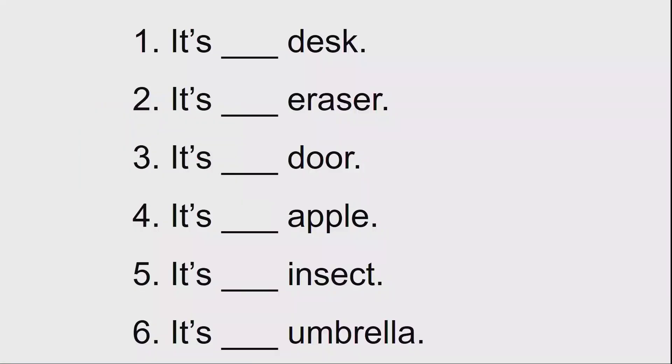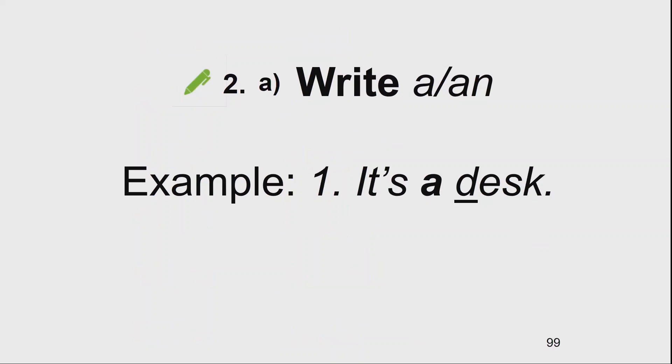Now, read the six sentences, please. Copy them into your copy books and write A or AN. For example, number one: It's a desk. Desk — D is a consonant. The correct article to use here is A. You work individually now. Have you finished? Now you work with your friend and check your answers. Is everything the same?